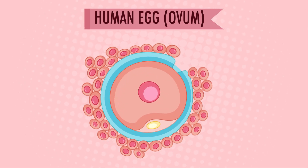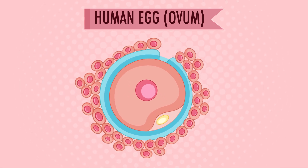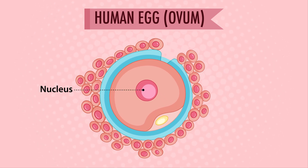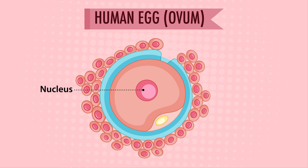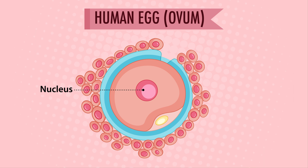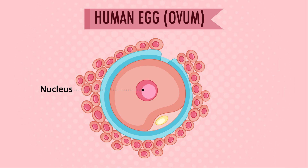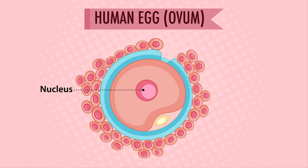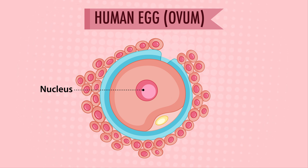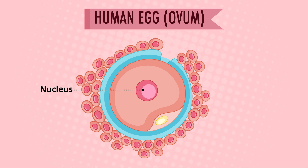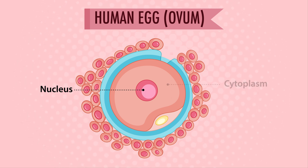The human egg is the female reproductive cell or gamete. The egg cell's nucleus houses the majority of the genetic material in the form of chromosomes — it is the cell's beating center where genes are located. Similar to sperm, an egg has half as many chromosomes as a typical cell, so after fertilization, when an egg and sperm join, the developing embryo will have a total of 46 chromosomes.